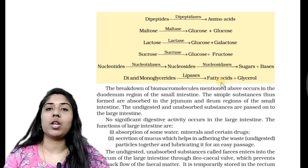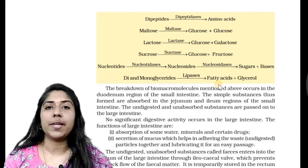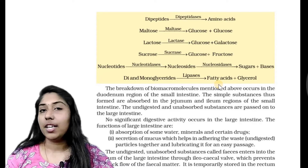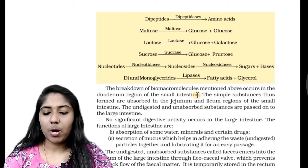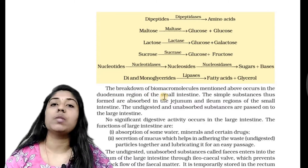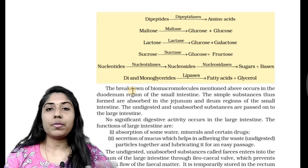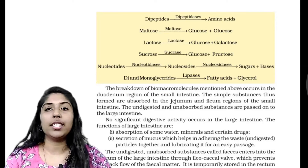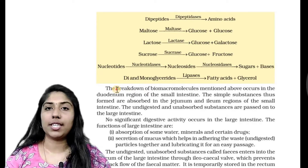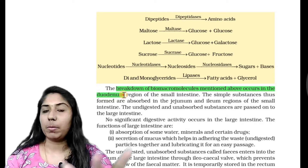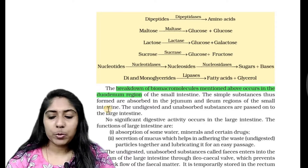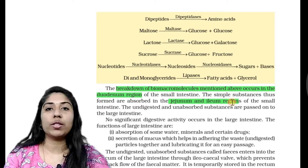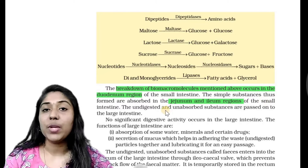This is how we absorb in our intestine. The breakdown of the biomacromolecules mentioned above occurs in the duodenum region of the small intestine. The simple substances thus formed are absorbed in the jejunum and ileum region of the small intestine. This is all this process — you absorb in the duodenum region of the small intestine.